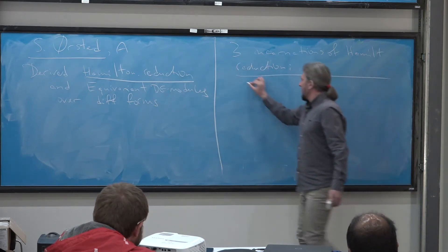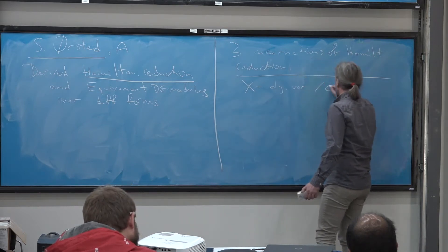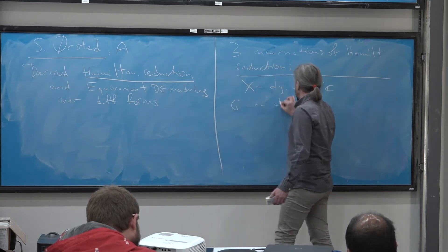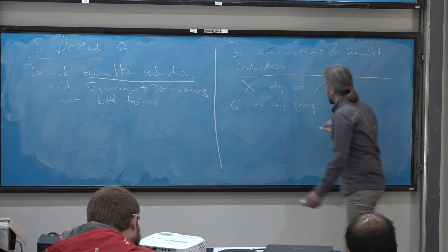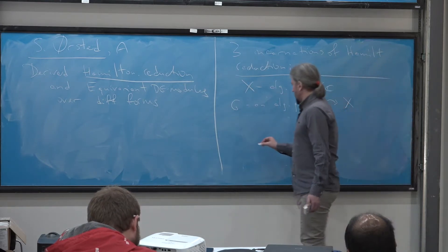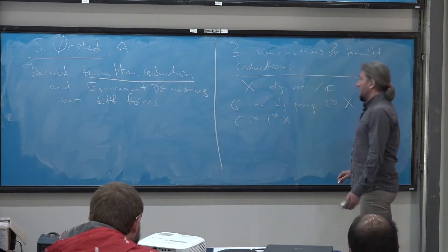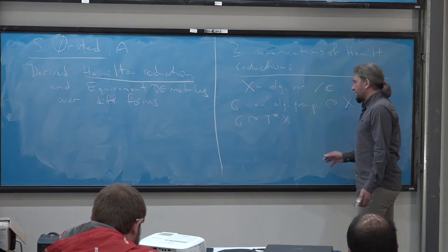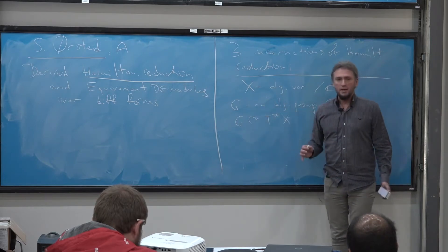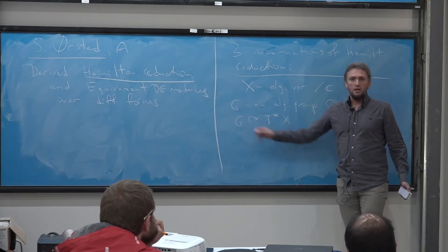So we have X, which is an algebraic variety smooth, say over complex numbers, and G, an algebraic group acting on X. Then certainly G acts on cotangent bundle to X and Hamiltonian reduction corrects the fact that even though you can take the quotient of X by G in good cases, it's unreasonable to take the quotient of cotangent bundle of X by G. Instead, you do something else.